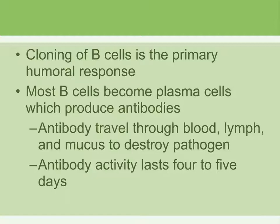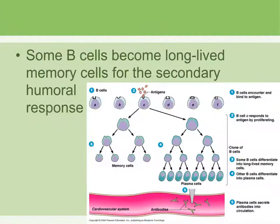Antibodies usually last four to five days, but this can vary depending on the type of antibody. Most B cells become plasma cells to produce antibodies, but some become memory B cells. These memory cells will later carry out the secondary humoral response.